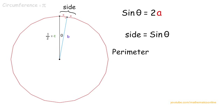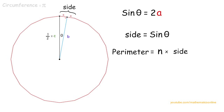The perimeter of an equilateral polygon is defined by the number of sides times the length of a side. Replacing the number of sides with n, the perimeter equals n times side. Since side equals sine of theta, the perimeter is equal to n times sine of theta.